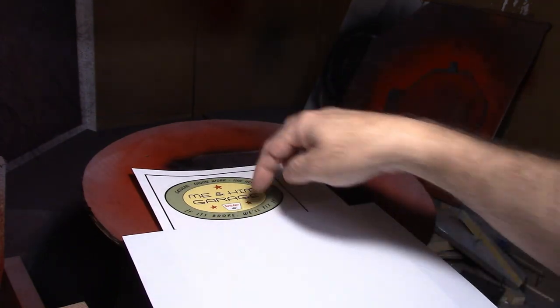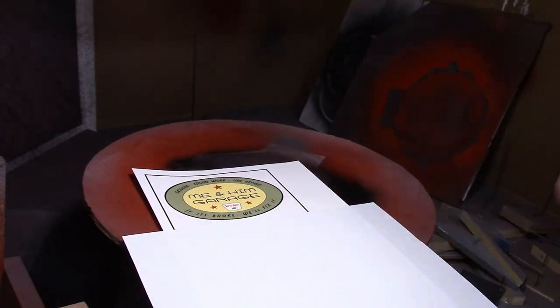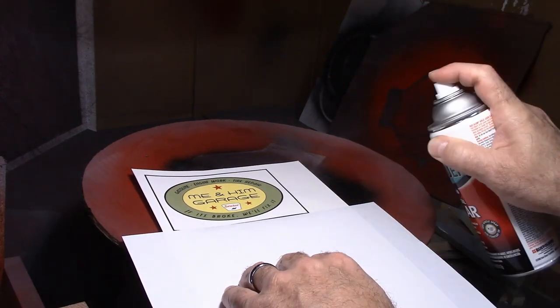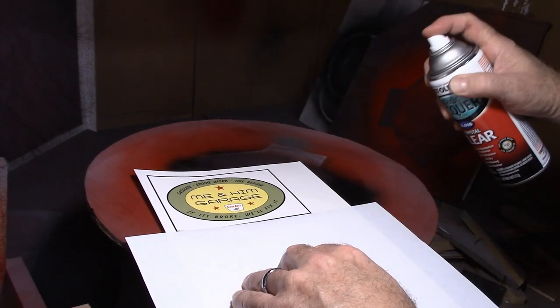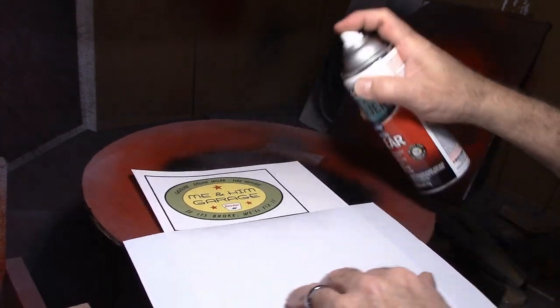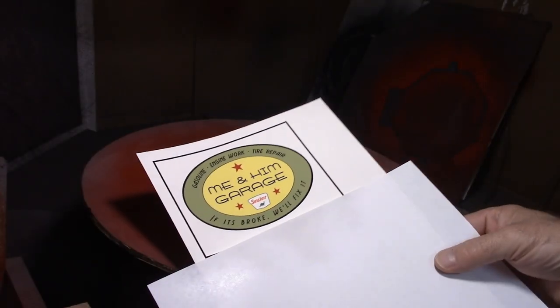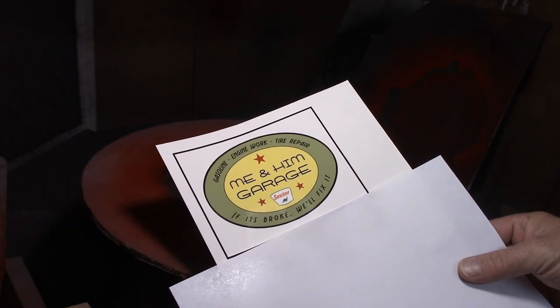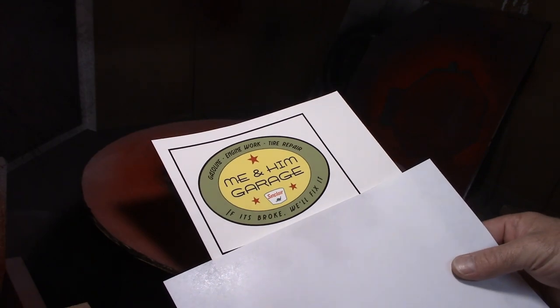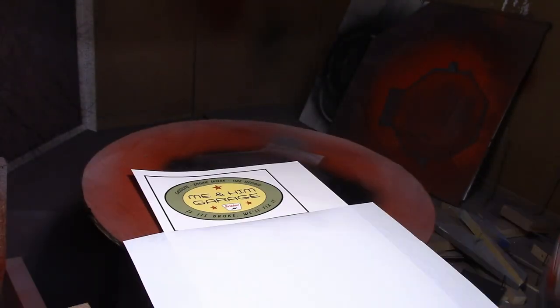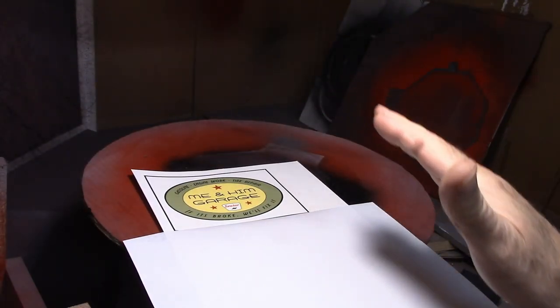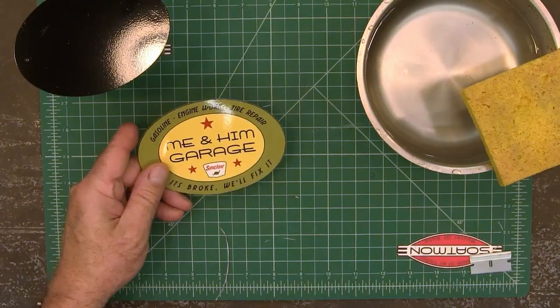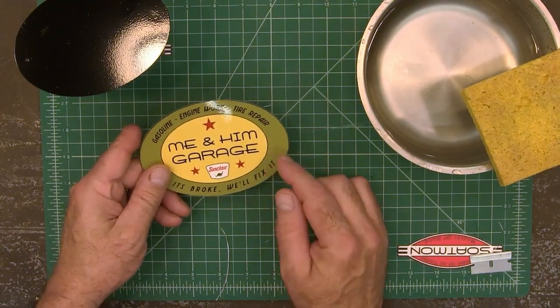If you forget to do this, which I've done before, and you put it in the water, this just turns to a goo. It helps to hold it up to the light and see if you have a good even shine all the way across it. Let that dry and if you don't think you got a good even coat, come back and give it another coat.